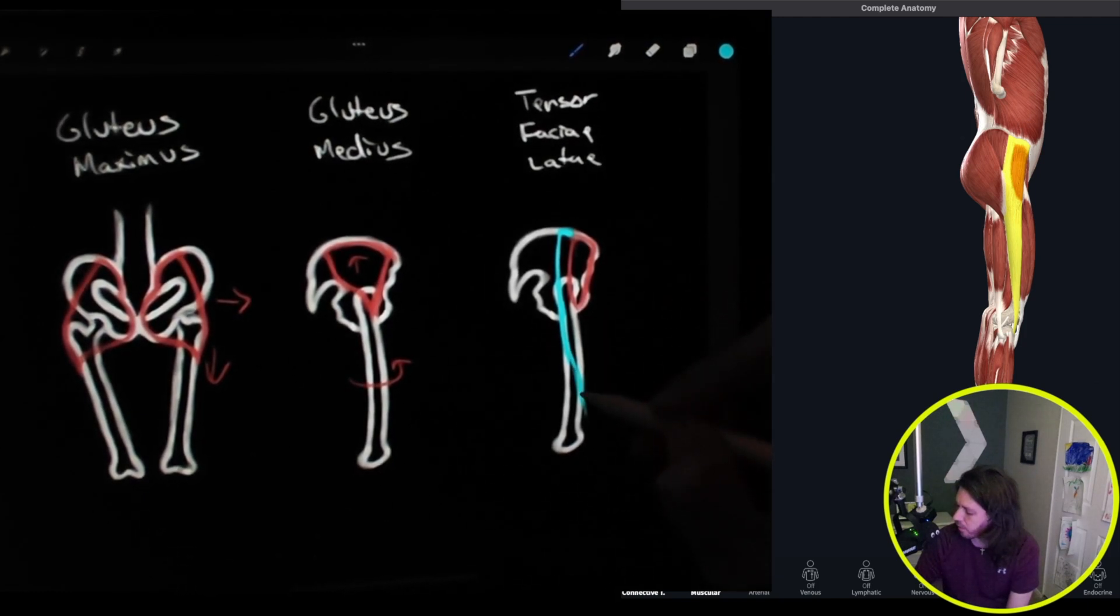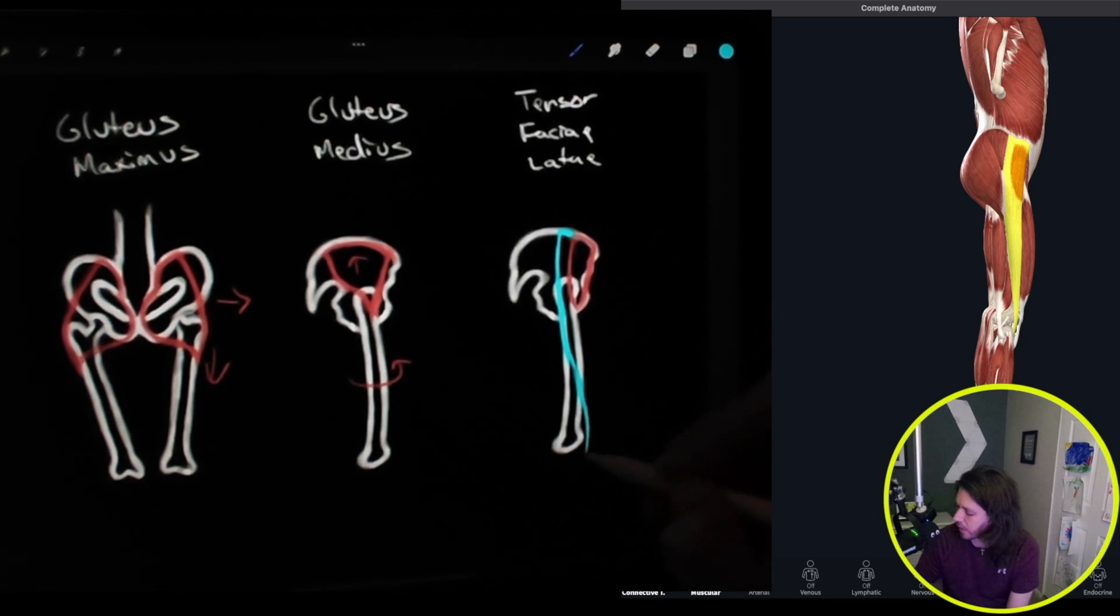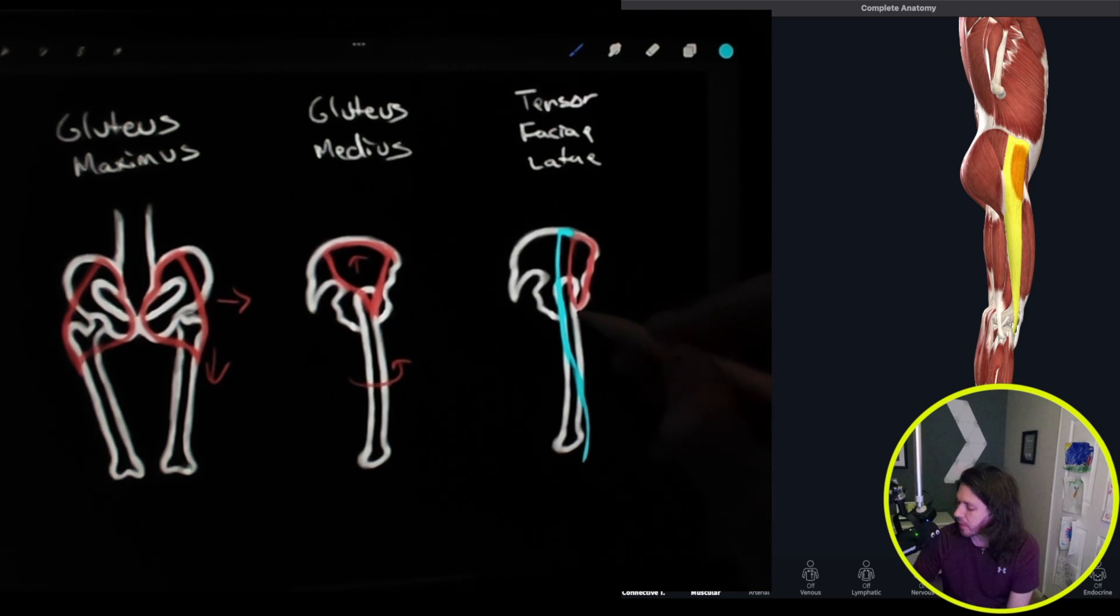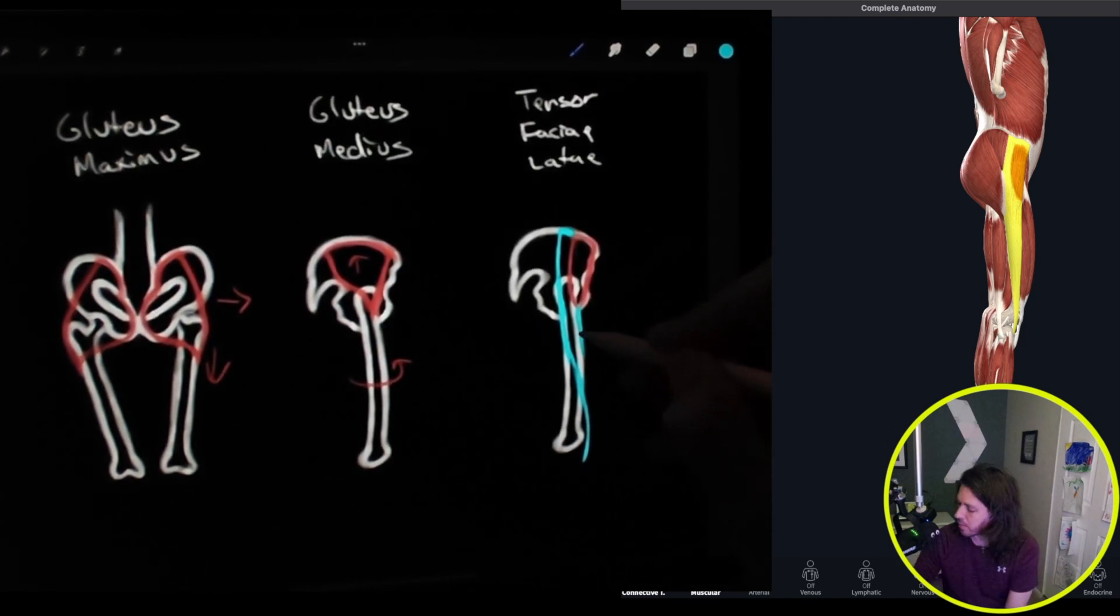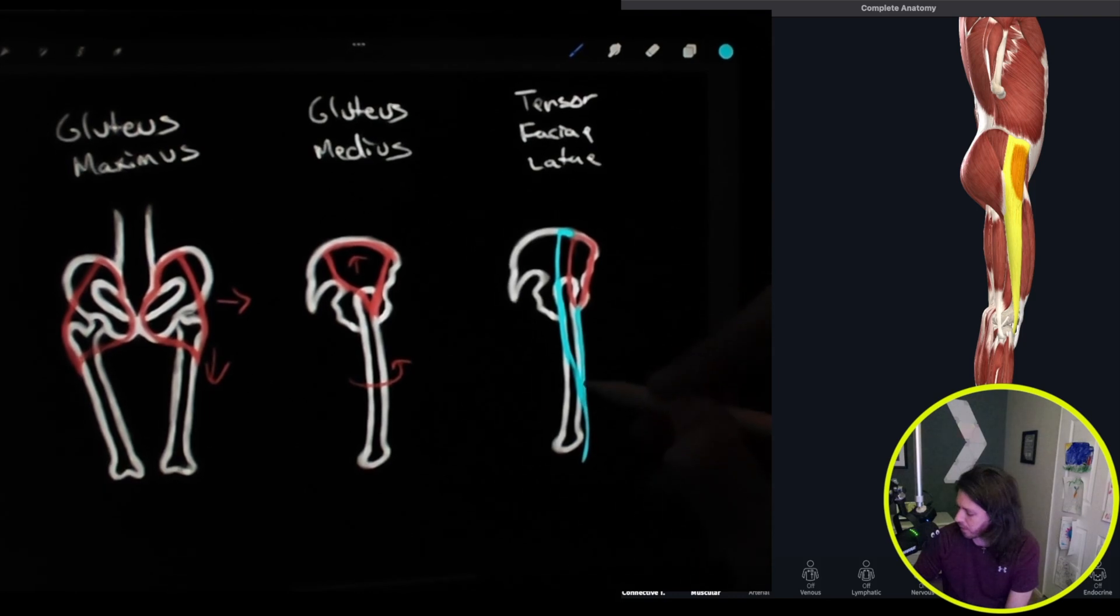And then it starts to come to the front of the leg and attaches actually to the tibia. And so point of insertion for the tensor fasciae latae is right here at the bottom of that great trochanter. And it comes down to the front of the femur and connects here.